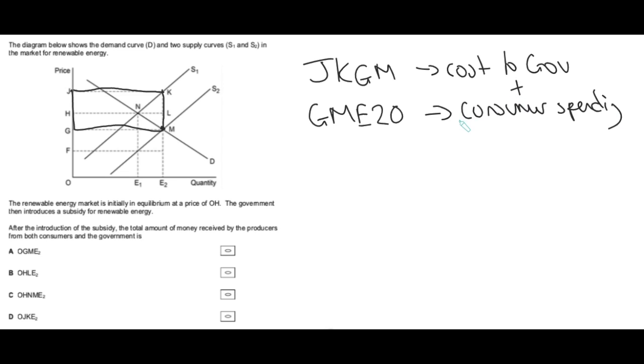Add the two together and you get total producer revenue and that is J, K, E2 and 0 and that gives you the answer of D. But you see how the top bit, knowing the cost of the government is so important, that's a simple way. New equilibrium, vertical distance between the supply curves multiplied by that quantity Q2 and that will give you the cost of the government.